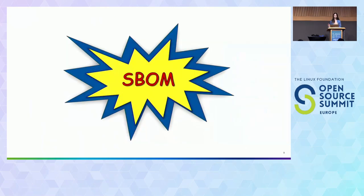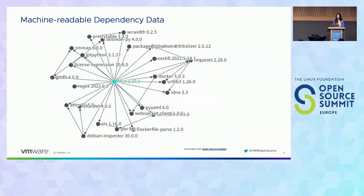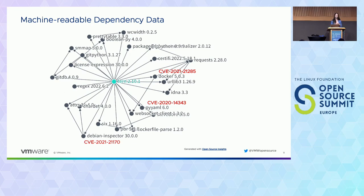And here comes the S-BOM. A software bill of materials can help address these needs. An S-BOM uniquely identifies a piece of software and its dependencies in a machine-readable format, and it helps organizations by reducing license compliance and security risks. For example, an S-BOM can help identify known security vulnerabilities in some of our dependencies, help share provenance information, gather relationship information for our dependencies, or identify if somewhere in the dependency tree there is a tiny dependency with an incompatible license that can get us into real legal trouble.